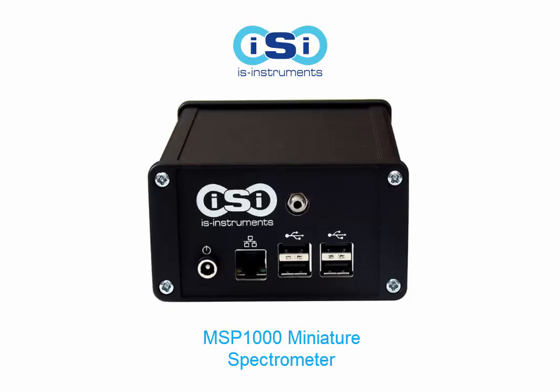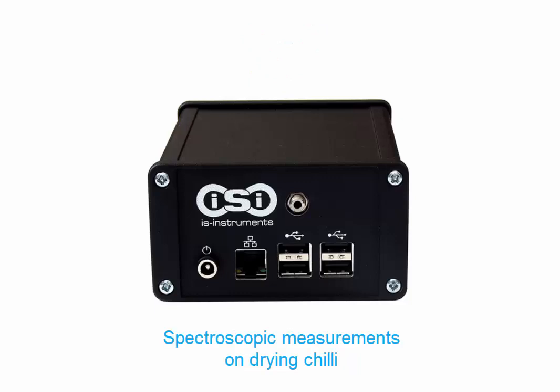This video demonstrates the operation of ISI's miniature spectrometer in a practical application. Specifically, it shows how the colour of a drying chilli changes over time by looking at the reflectance spectrum.